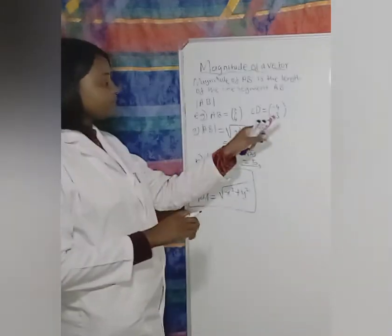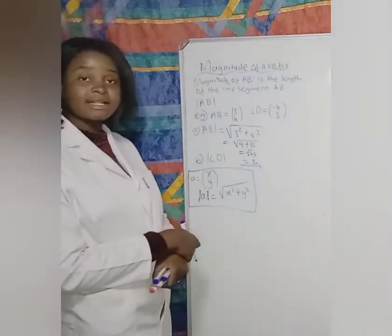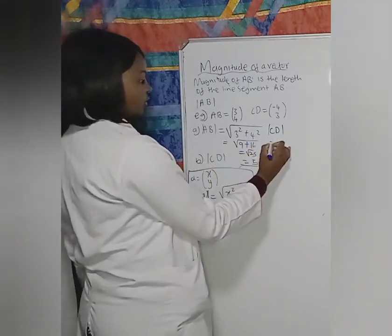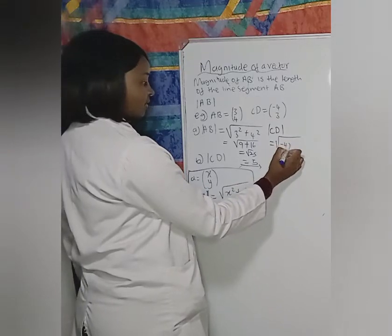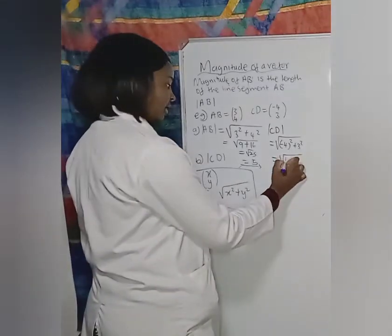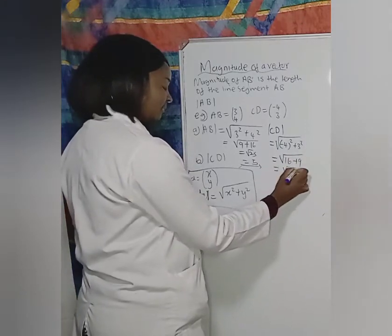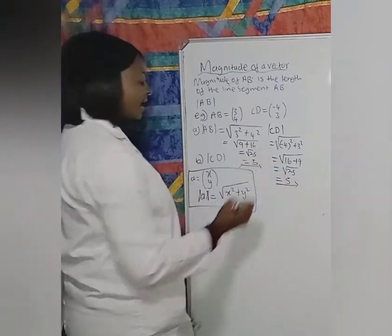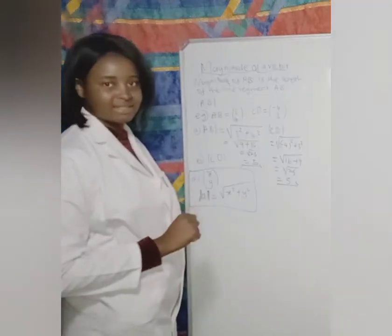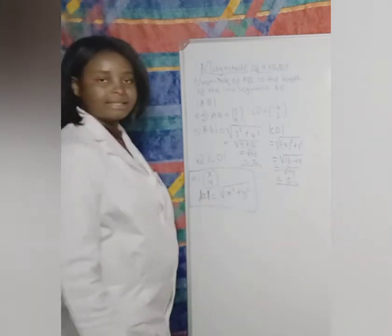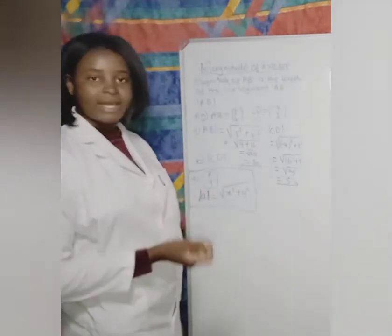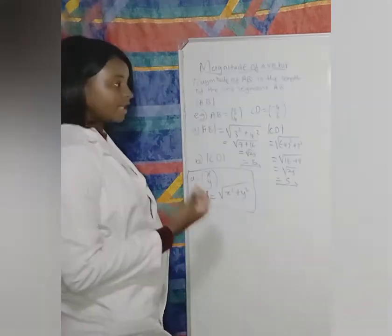For CD, they said it's (-4, 3). The magnitude of CD is the square root of (-4) squared plus 3 squared. (-4) squared is 16 — most people get this wrong — plus 9, which gives us 25, and the magnitude is 5. Take note: minus 4 to the power two gives a positive 16, not a negative 16. If you left it as minus 16 plus 9, the square root of a negative does not exist. A negative number once you square it becomes positive.